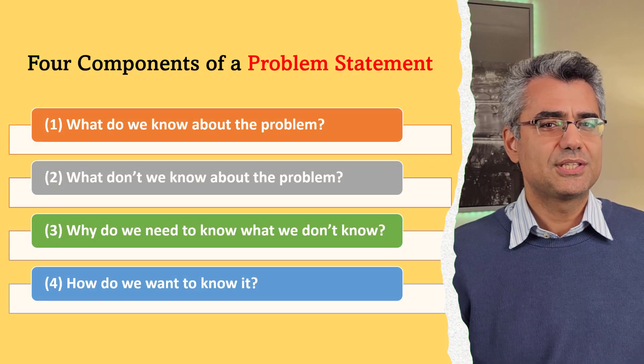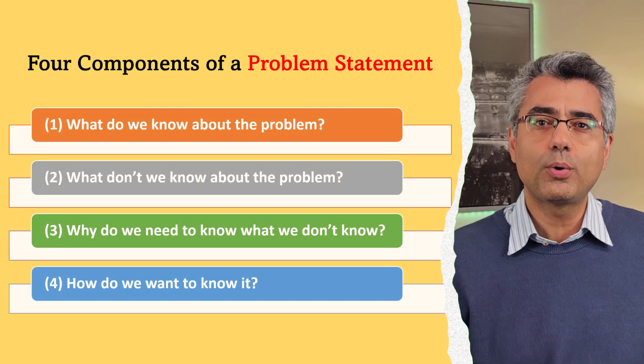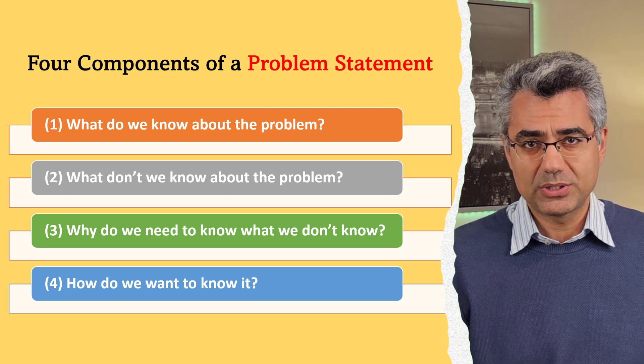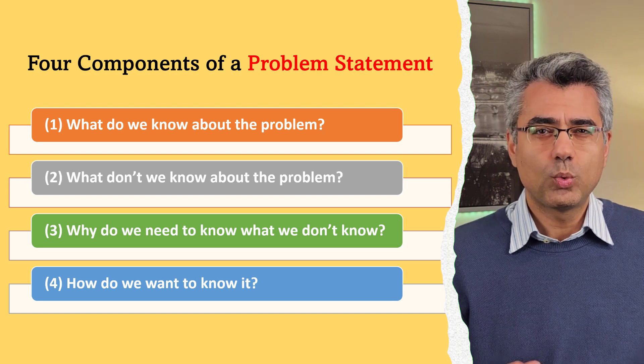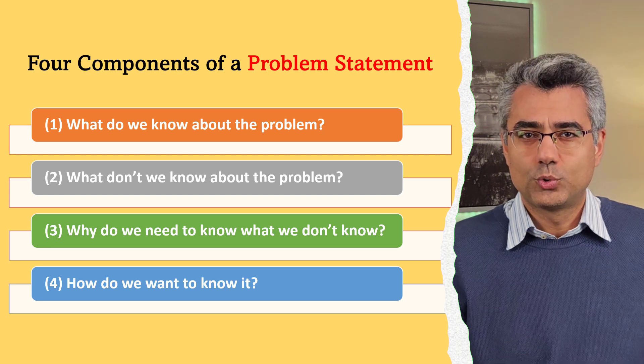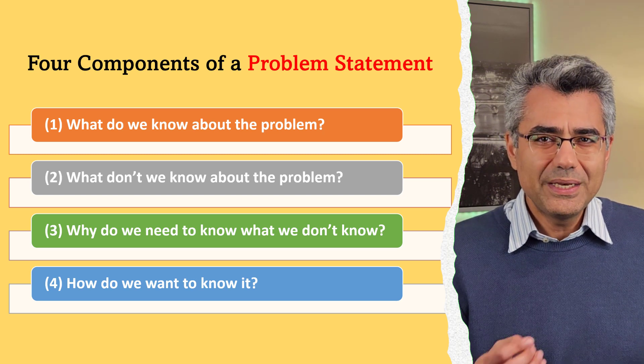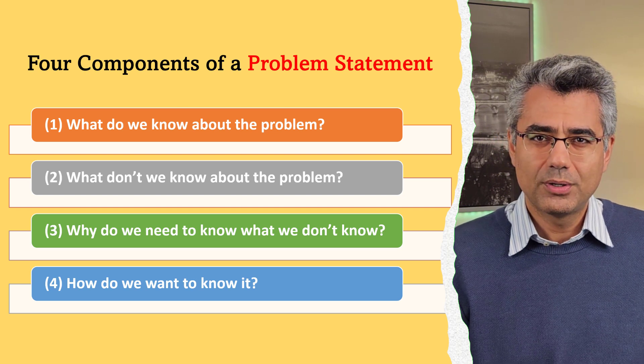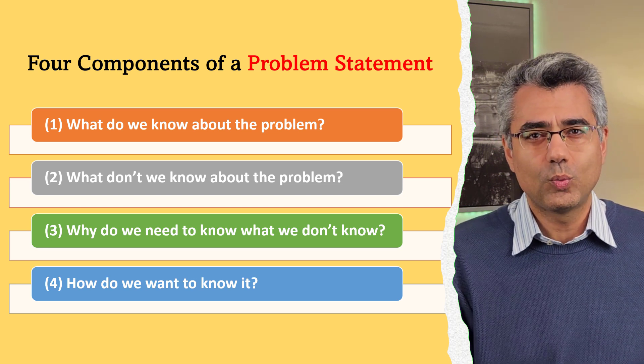Let me share my step-by-step method for writing a strong problem statement. A problem statement consists of four parts to address four main questions. Question one: what do we know about the problem? Question two: what we don't know about the problem? Question three: why do we need what we don't know about the problem? Question four: how do we want to know what we don't know about the problem? Now I want to explain the details that you need to provide in each of these four parts.